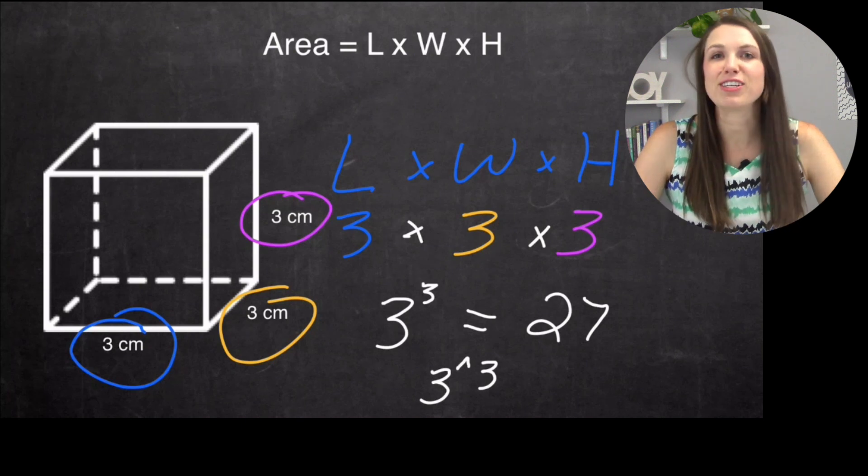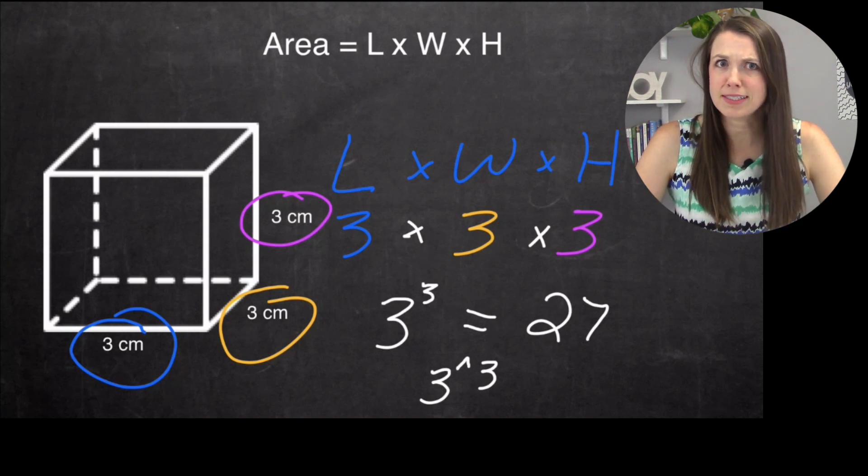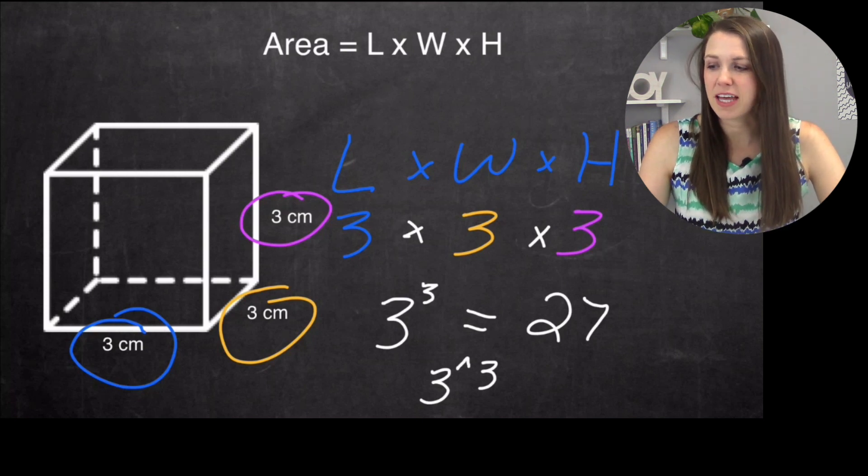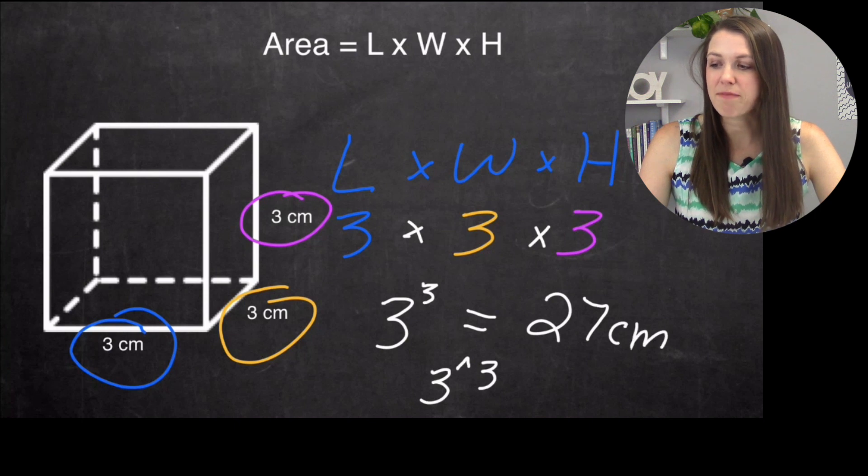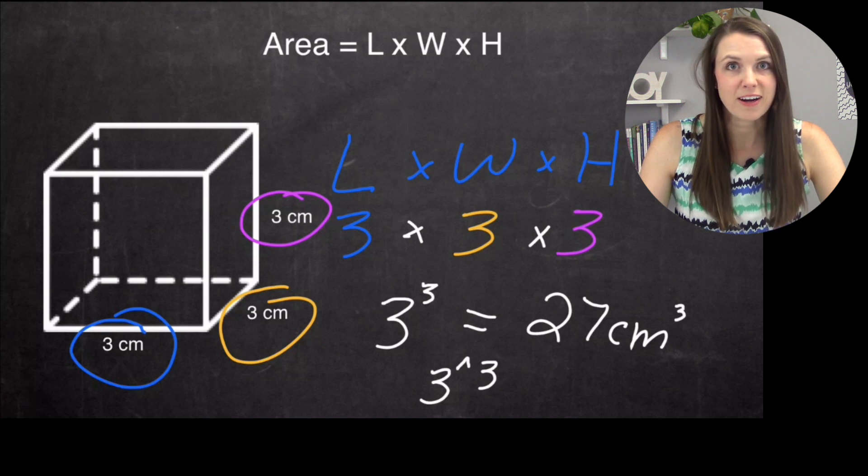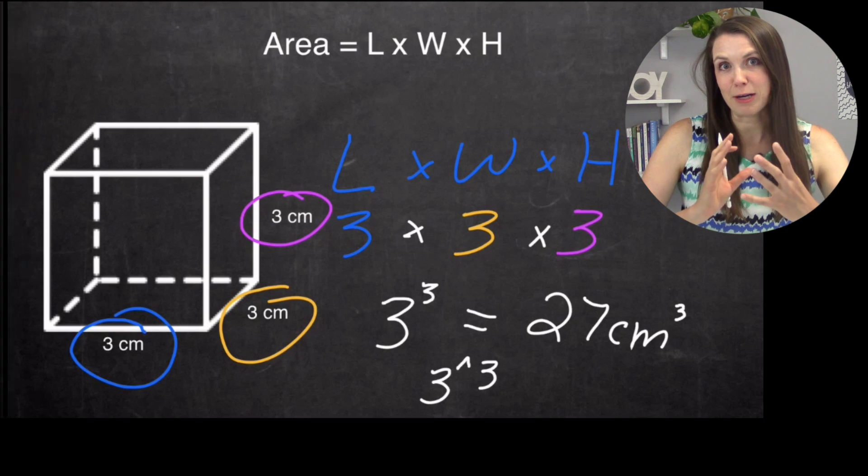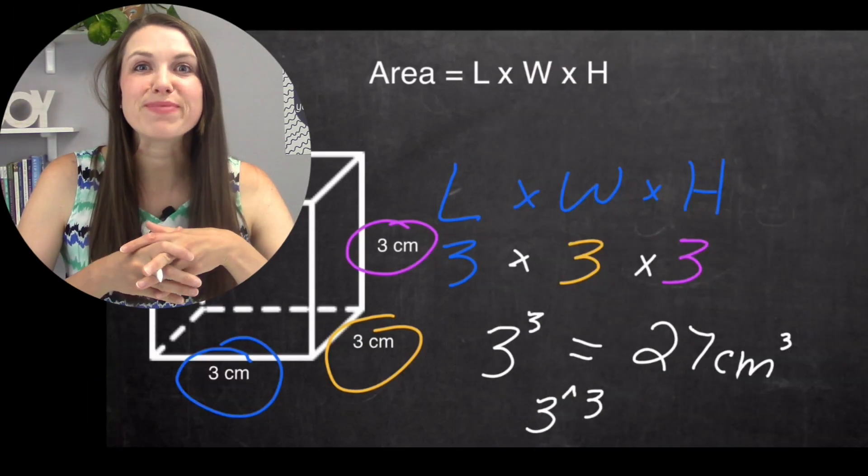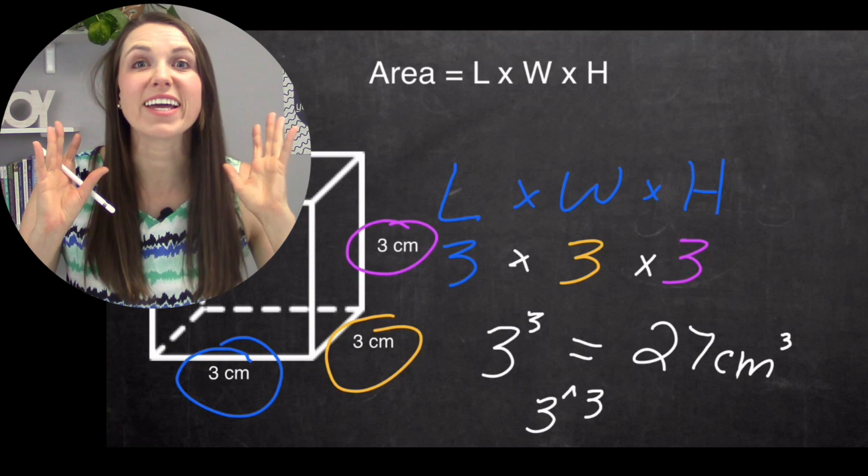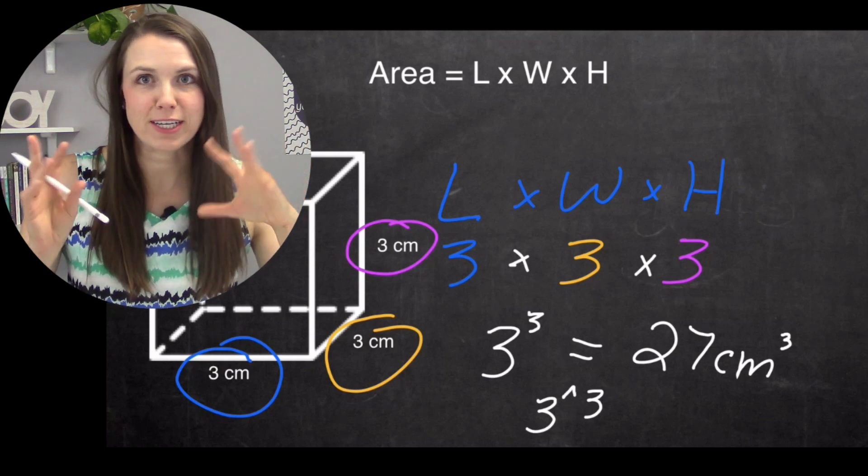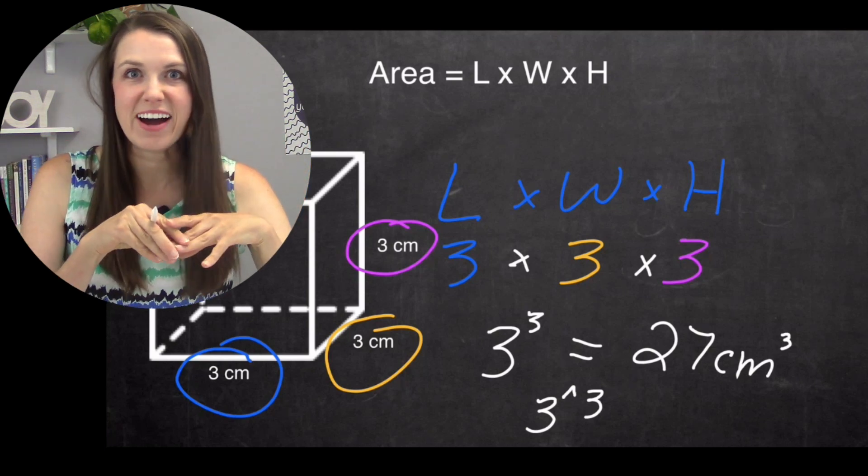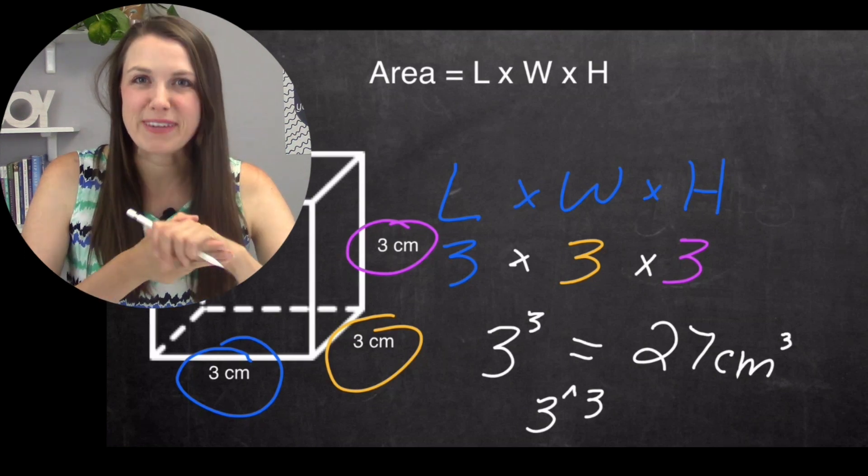But I don't want to leave it just as 27, because if I'm taking a test or doing homework, I could actually get it wrong, because I have to label it. I want to make sure I have my centimeters, and then I'm going to put a little cube on the top there, because that shows that it is a three dimensional figure. I'm using a new program here, and I'm so giddy about all the different colors that I can use on these slides. It makes it so much more fun.